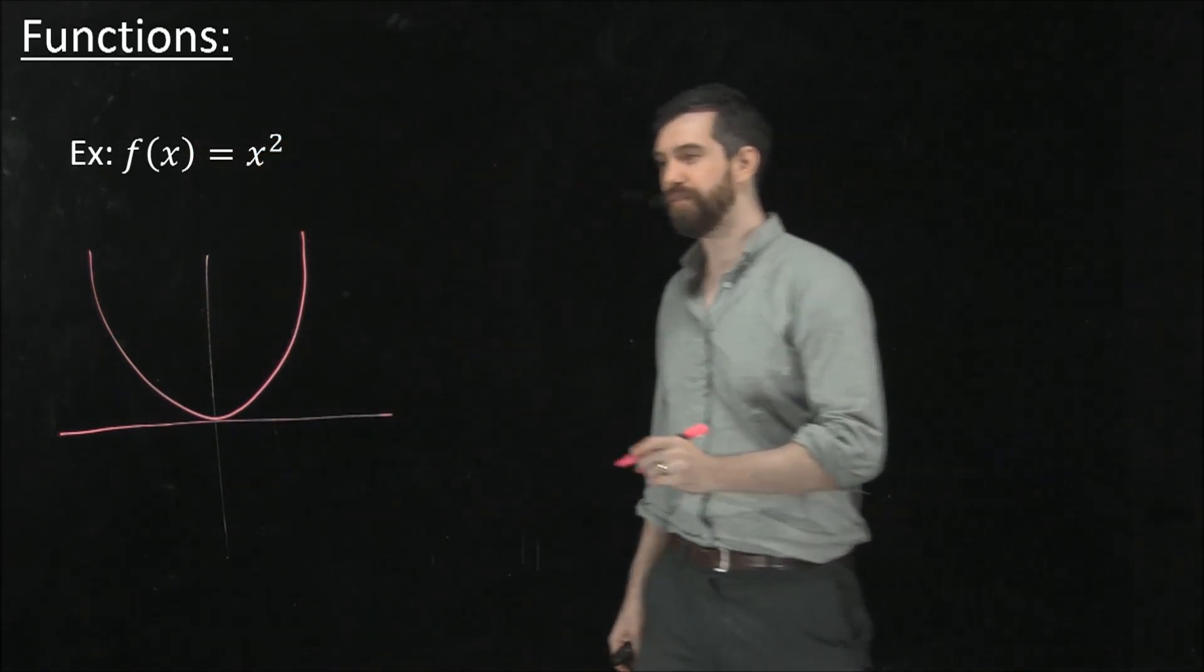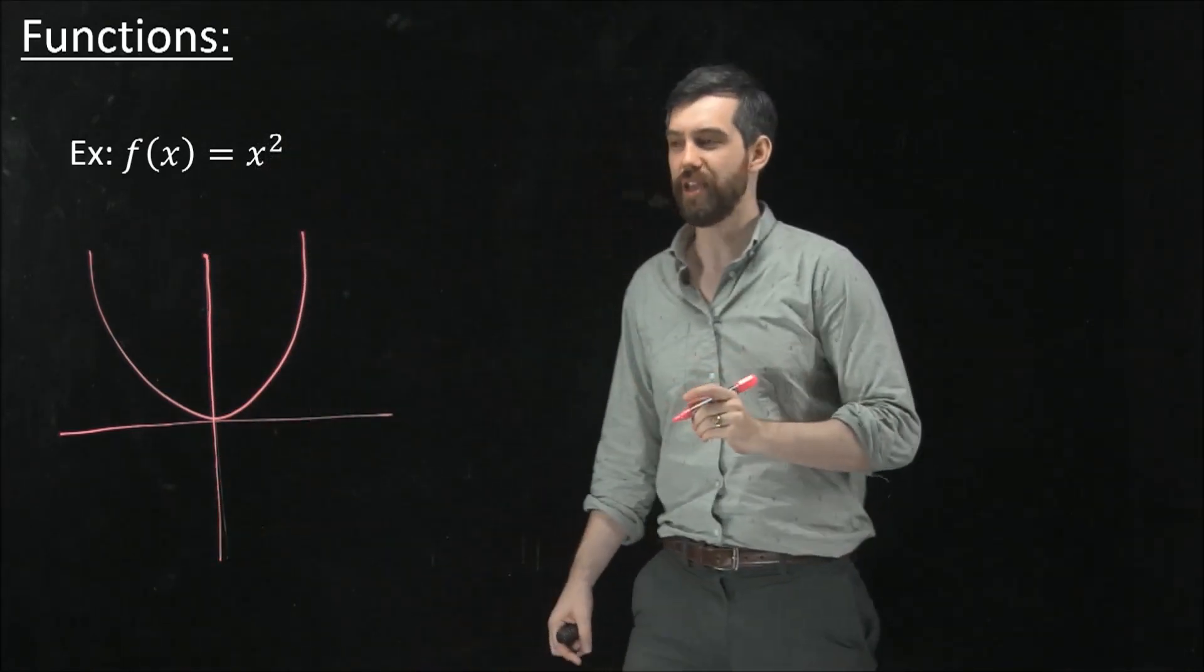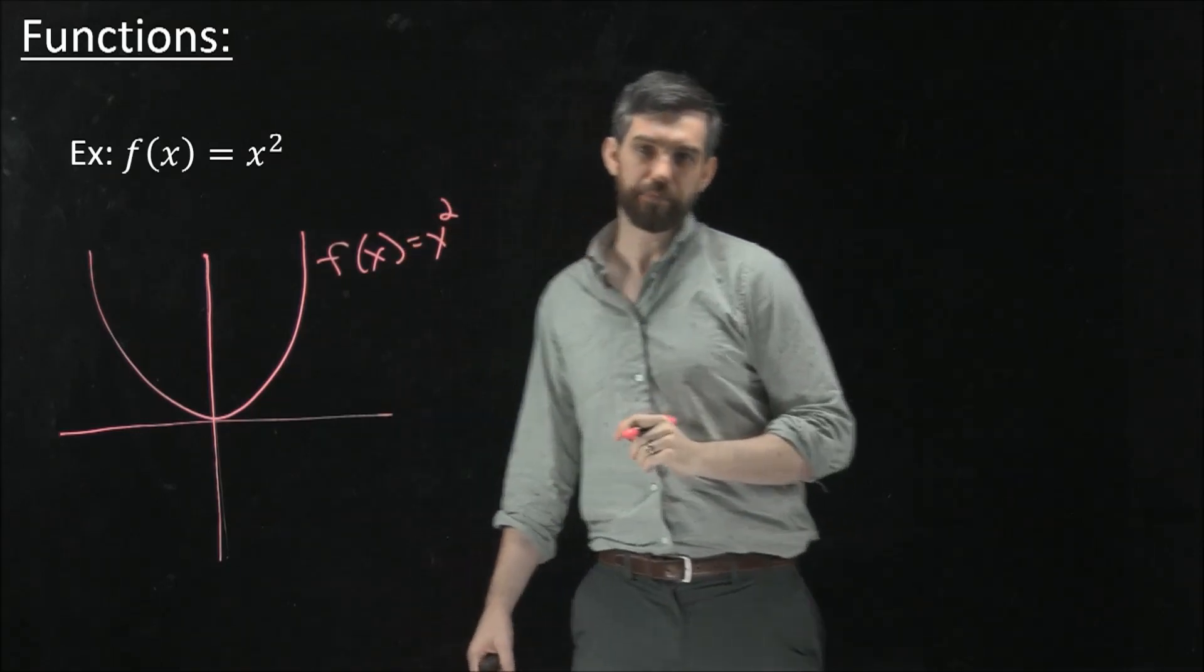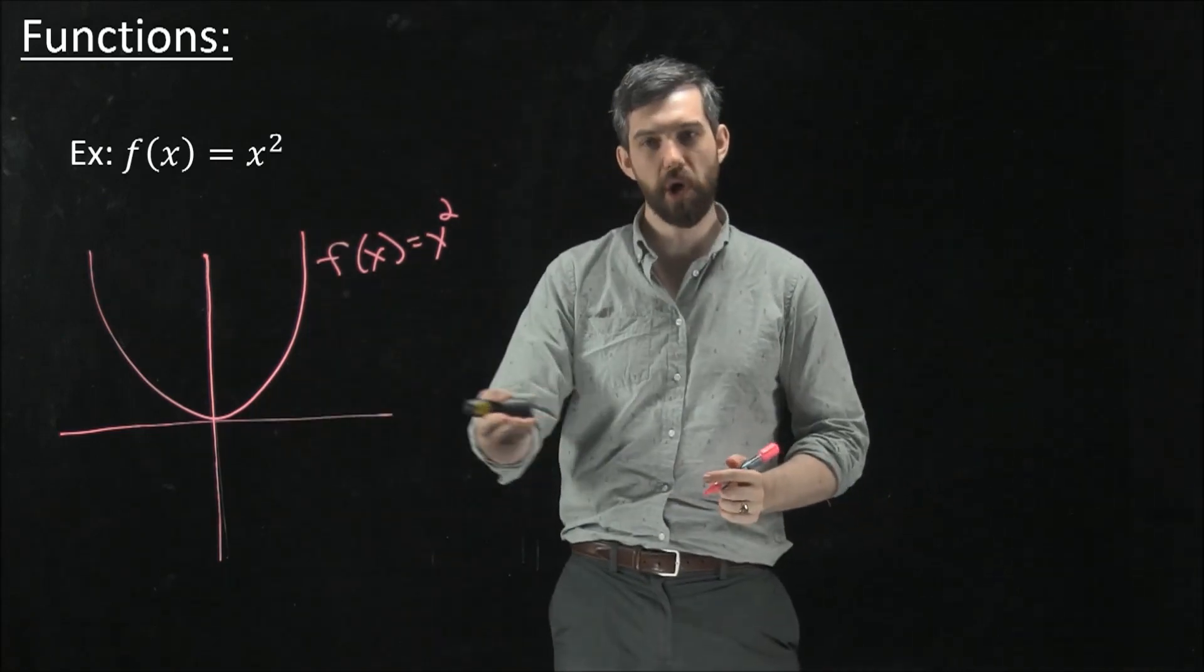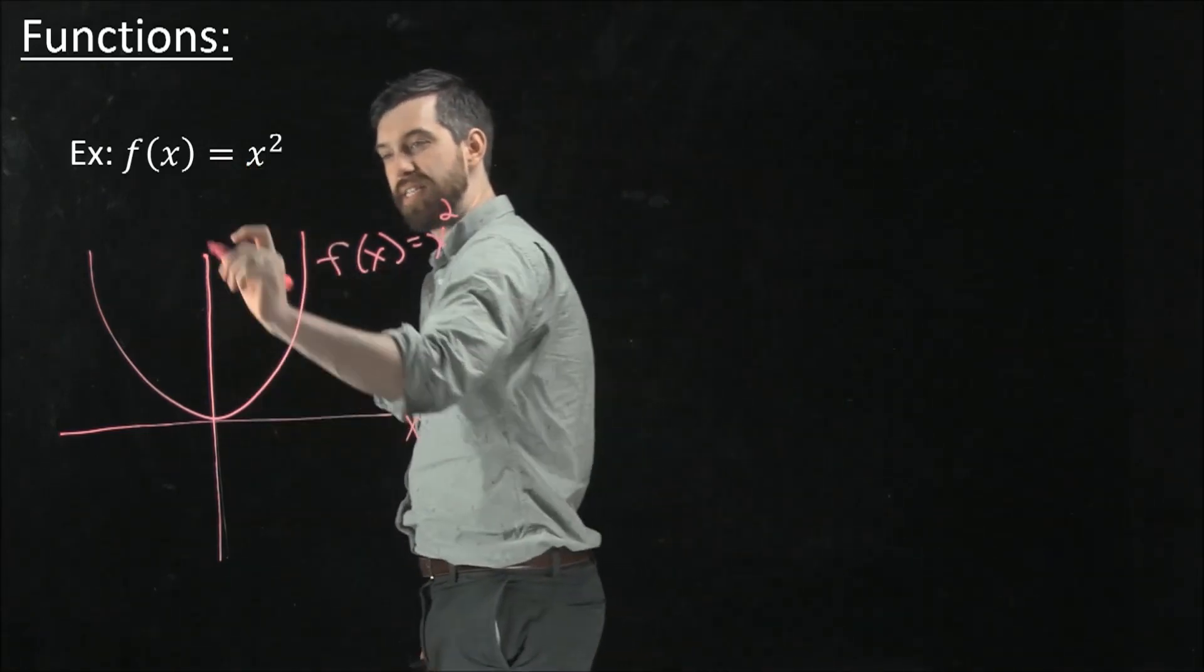But I want to visualize what is really going on here for this graph of f of x equal to x squared. The way I want you to think about it is I have this horizontal axis, this is my x-axis, and I have the vertical axis, this is my y-axis.